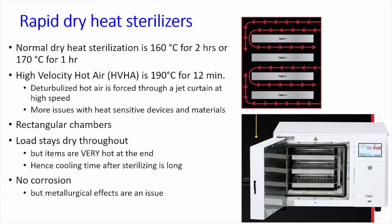High velocity hot air sterilizers are a form of dry heat sterilizer with a shorter cycle time, achieved by using a higher temperature. Typical dry heat units run at 160°C for two hours or 170°C for one hour; these run at 190°C for 12 minutes. The air is forced around in a jet curtain design so there's no turbulence in the hot air. At 190°C, there are many problems with heat-sensitive instruments and materials. The items are very hot at the end of the cycle, so the extended cooling time is an important practical limitation.